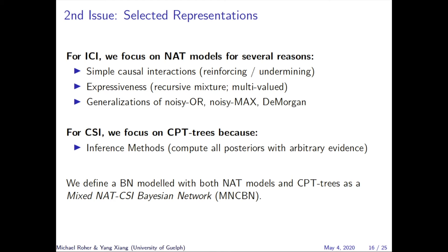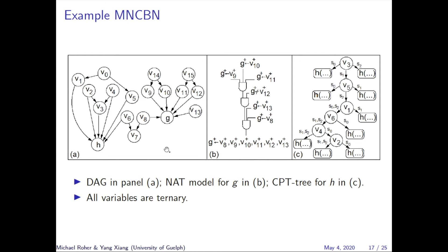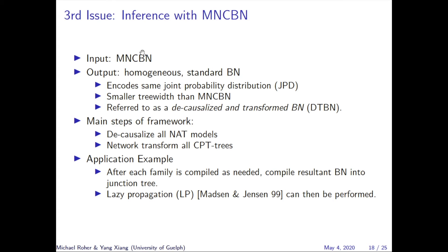We define a Bayesian network with both NAT models and CPT trees as a mixed NAT CSI Bayesian network (MNCBN). An example of an MNCBN is shown here, where node H is modeled by a CPT tree and node G is modeled by a NAT model. To conduct inference on an MNCBN, we outline the following framework: it takes an MNCBN as input and outputs a homogeneous standard BN encoding the same joint probability distribution while maintaining a smaller tree width. We refer to this result as a decausalized and transformed BN. The main steps are to decausalize all NAT models and network-transform all CPT trees, after which the resultant DTBN can be compiled into a junction tree for efficient lazy propagation.